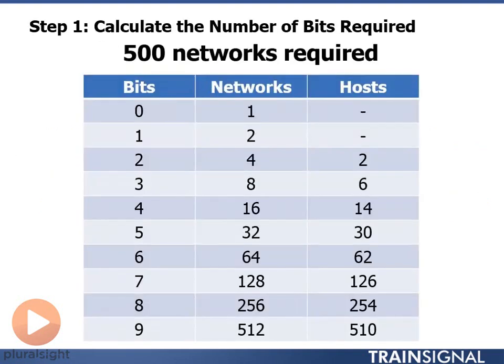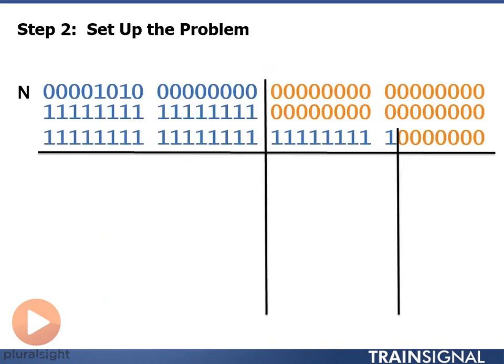What we want to know is how many bits do we need to borrow for 500 networks. We look up in our chart here under networks. We find 256 is too few, 512 is too many but meets our requirements. We need to borrow 9 additional bits to put into our host portion. Here's the problem setup. We found out how many bits we needed to borrow. We write down our given information. We draw a line between our given network portion and given host portion.